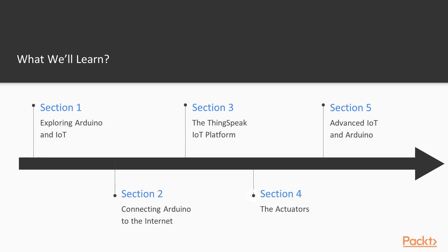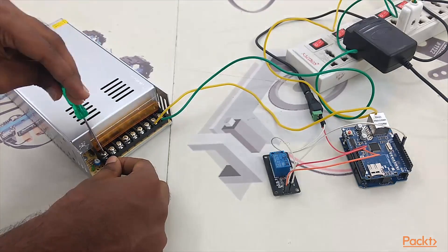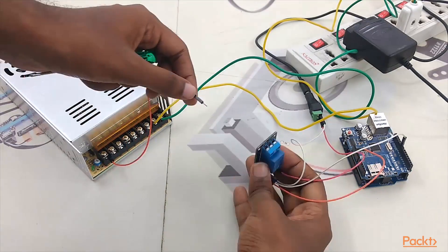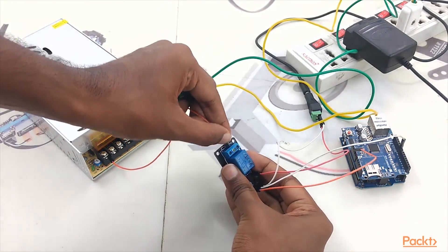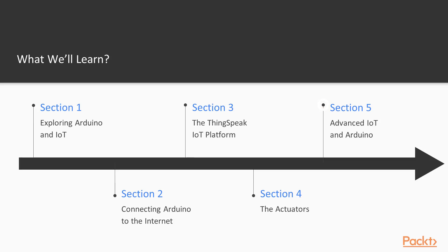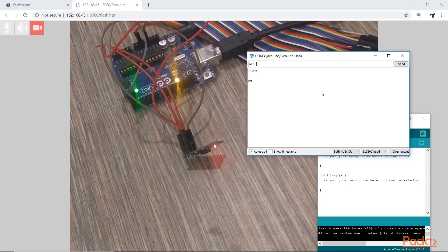Moving on to the fourth section, the Azure Readers — here we will learn about the Azure components that we will be using in this course. And finally, in the last section, Advanced IoT and Arduino, you will learn about advanced topics like connecting Arduino to the internet wirelessly, and how to use the MQTT protocol to interface with ThingSpeak.